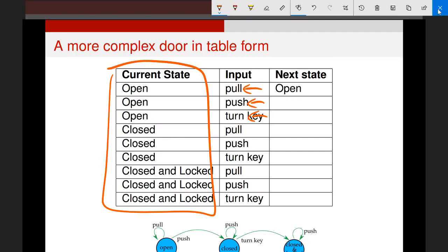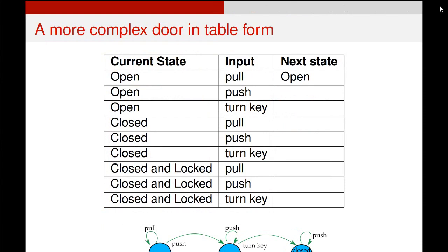So if we follow the diagram down the bottom, if the door is open and we pull on it, we stay in the open state. If the door is open and we push on it, we move to the closed state. If the door is open and we turn the key, we stay in the open state. And so we can imagine going through and filling out this table for every possible state and every possible interaction.